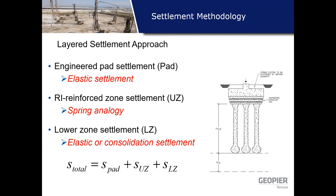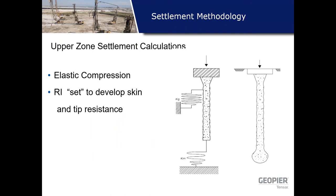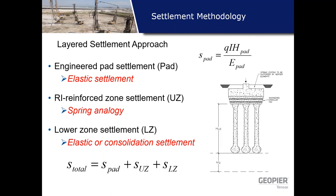If it's cohesive soil, you may want to use the alpha method: the alpha factor times the undrained shear strength of the cohesive soils. That's pretty straightforward — no magic. The next thing to consider is settlement of a rigid inclusion, which we break into three parts: the settlement of the gravel pad, the compression of the pier, and the compression of the lower zone materials. You add those up to get total settlement — pretty straightforward.